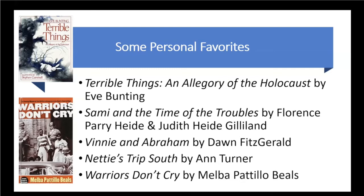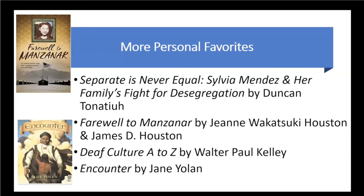Separate is Never Equal follows the story of a young Hispanic girl as she enters school in California only to learn she must go to the Mexican school. In the years fighting the system, her family undertook to change the law. Finally, in 1947, her case resulted in the striking down of segregation in California schools, and set a precedent that seven years later would be used in Brown v. Board of Education, ending segregation in all schools across America.